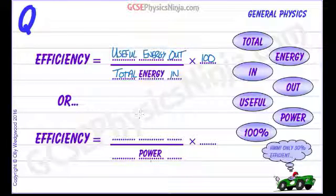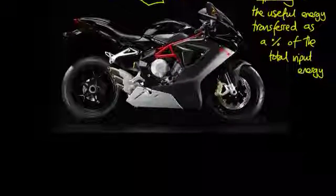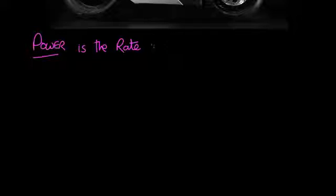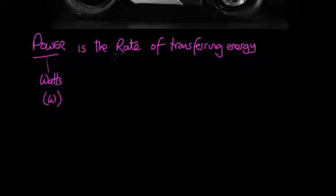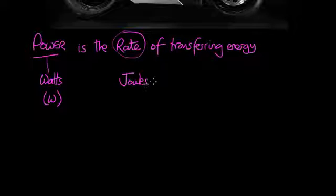The other way of calculating efficiency is using units of power. What do we mean by power? Power is the rate of transferring energy. We could say that power is the rate of doing work, as work done is transferring energy. Power is measured in units of watts, with the symbol capital W. That tells us how much energy is transferred every second — joules per second.